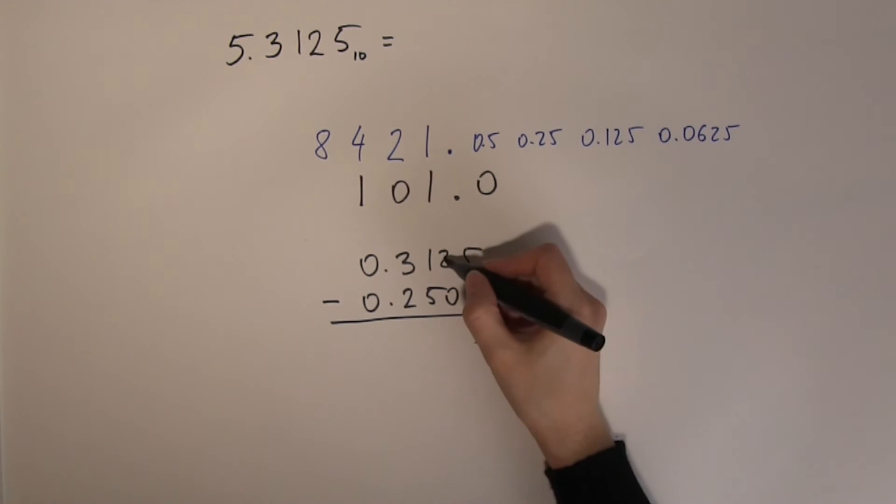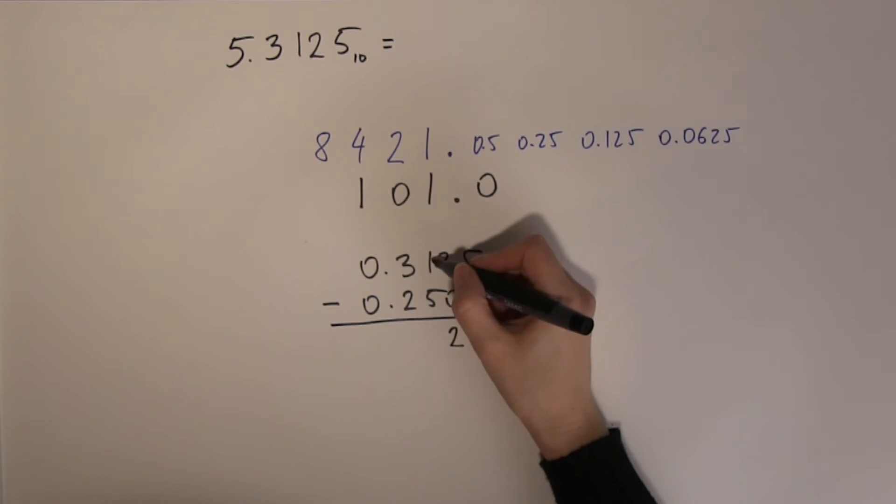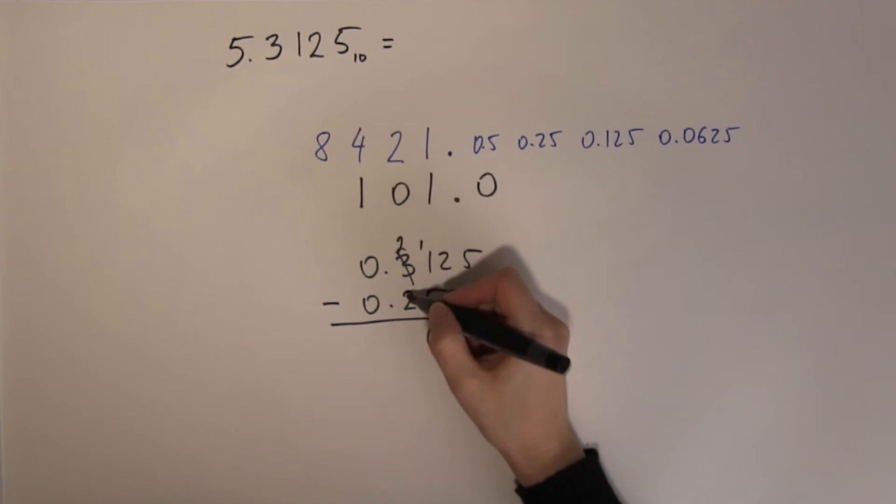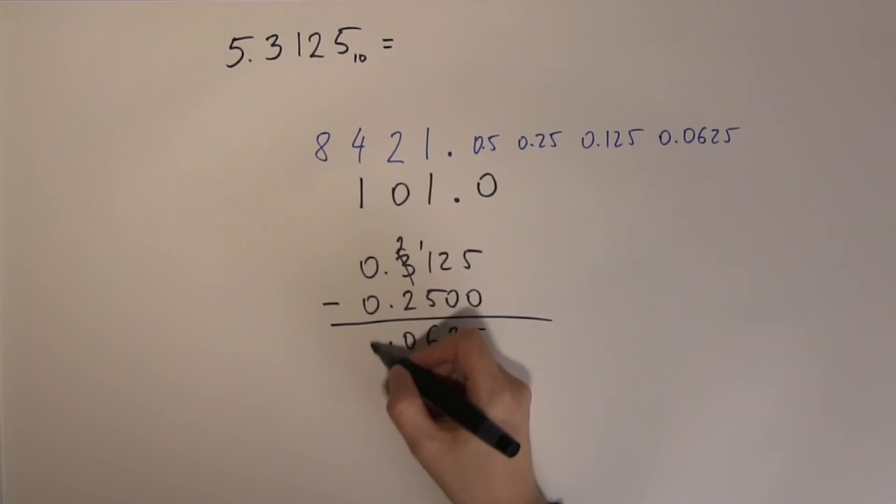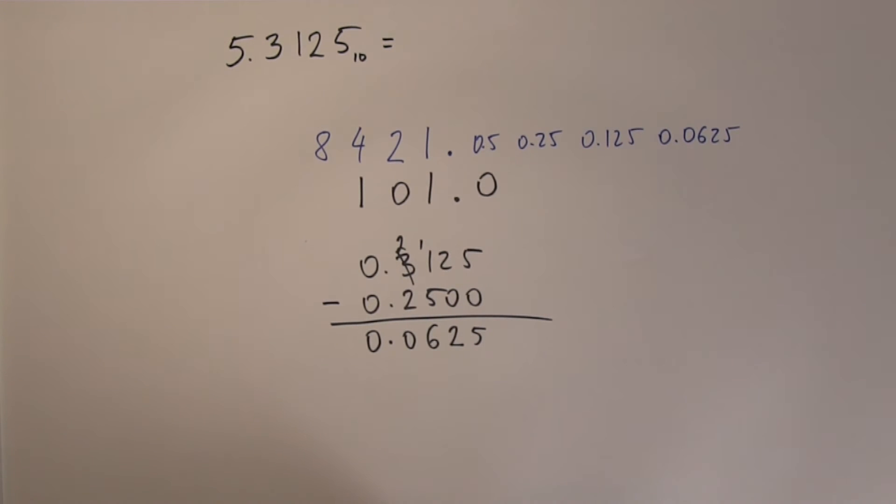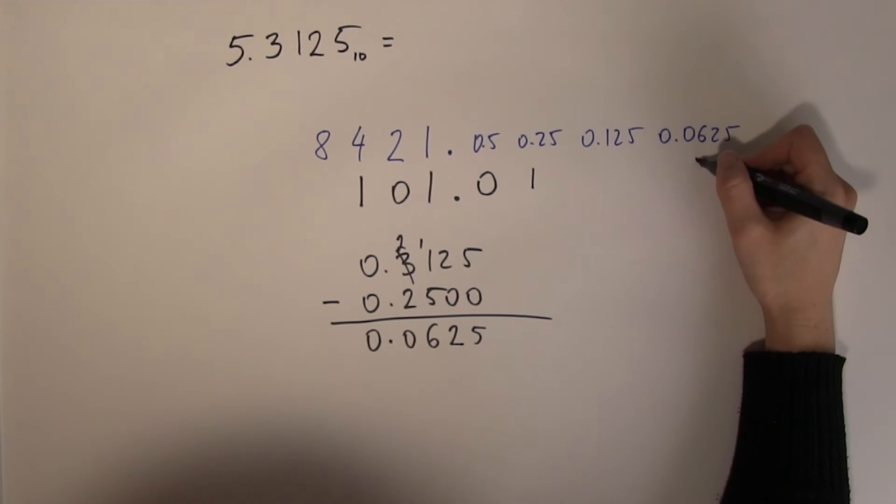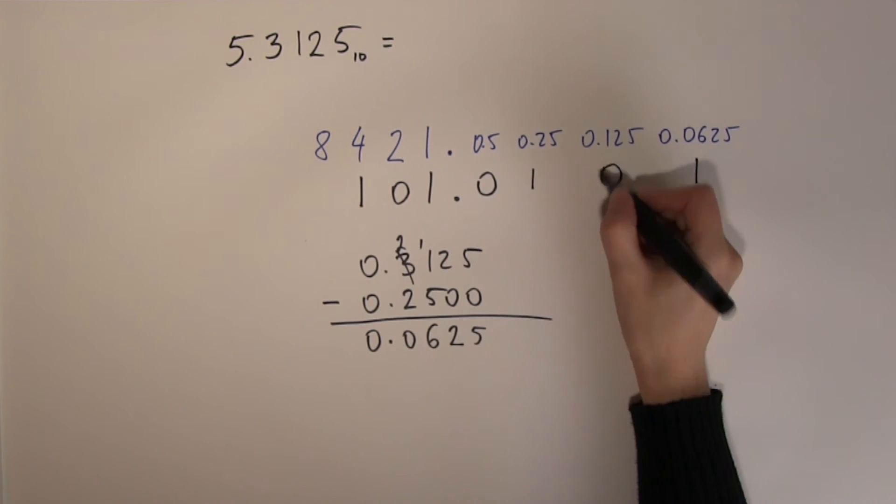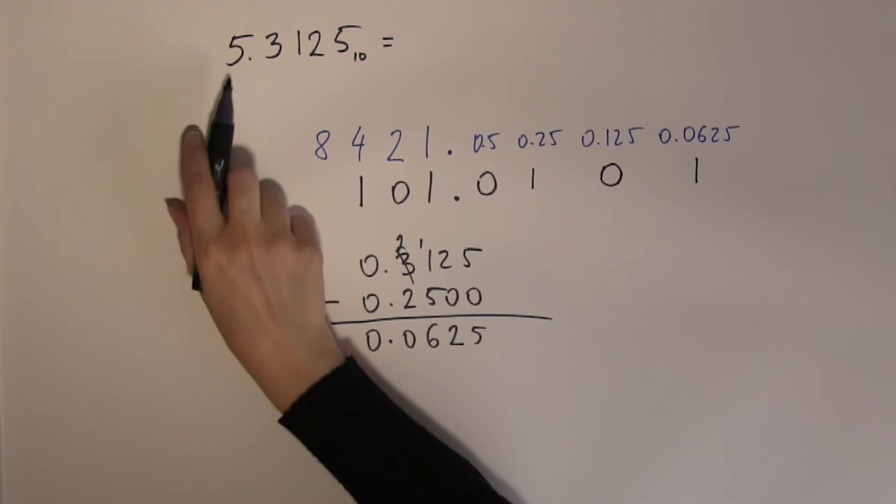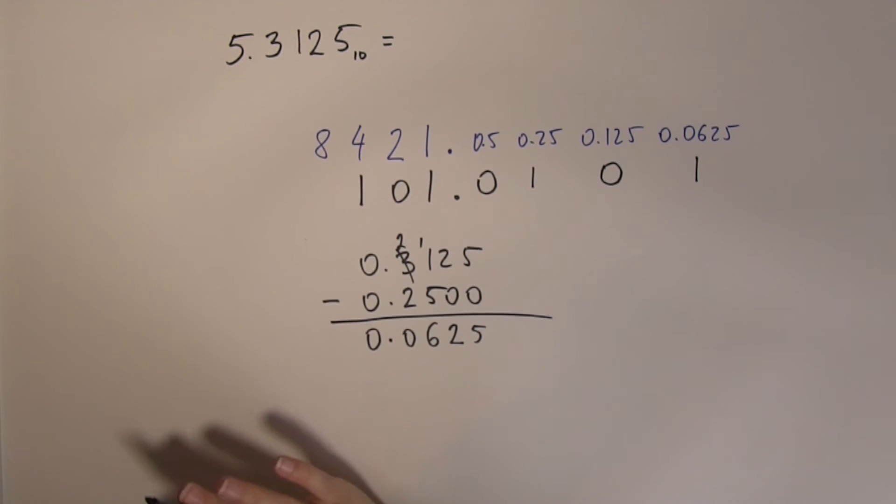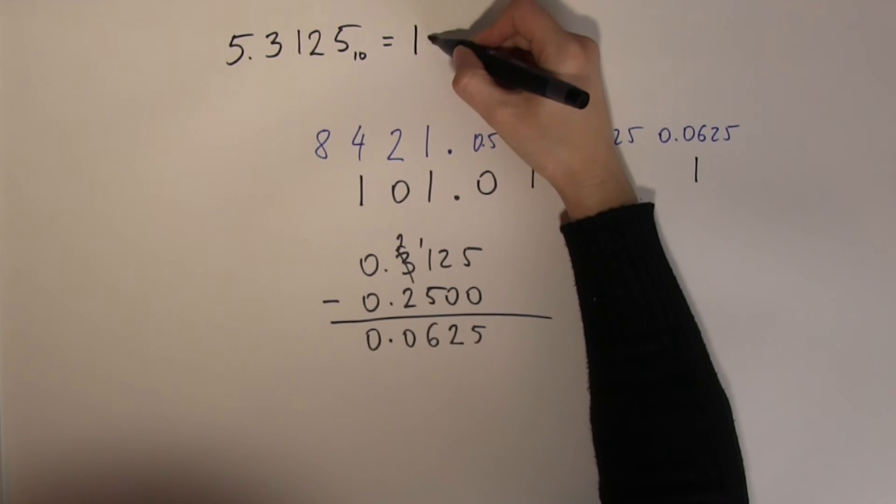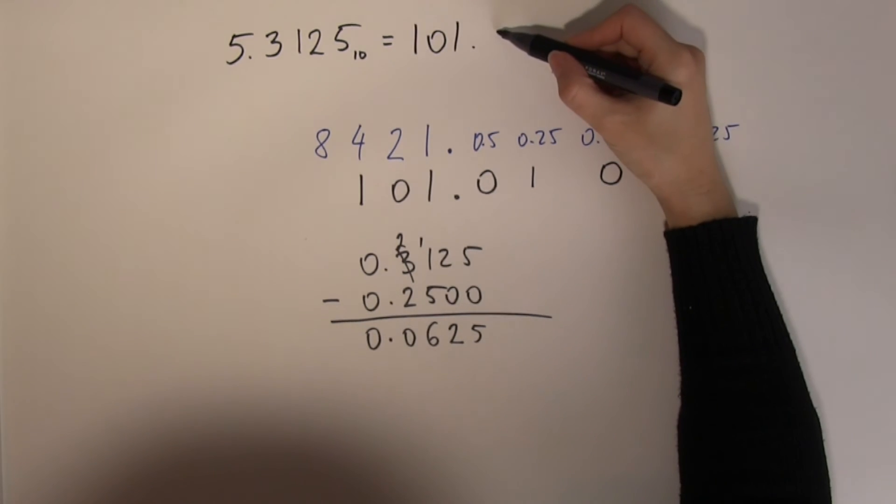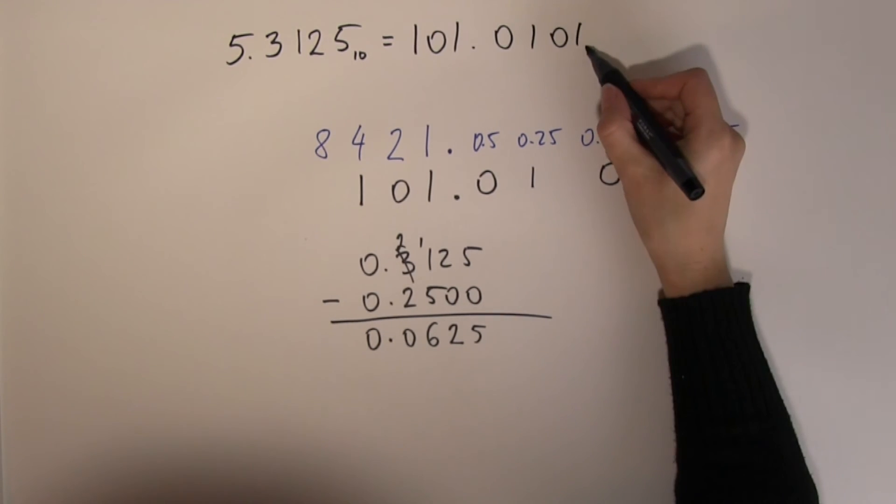First of all, to carry out this subtraction I need to fill in the 0s. 5 minus 0 is 5, 2 minus 0 is 2, 1 minus 5 I cannot do so I need to borrow, 11 minus 5 is 6, 2 minus 2 is 0, 0 minus 0 is 0. Well, that seems rather lucky because 0.3125 is just simply the sum of 0.25 and 0.0625. So that's another place value order. Therefore, 5.3125 in decimal is equivalent to 101 radix point 0101 in binary.